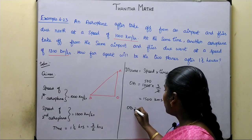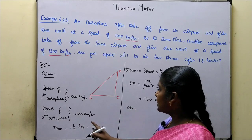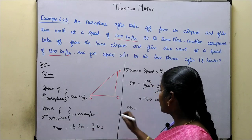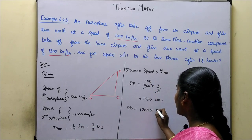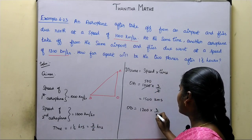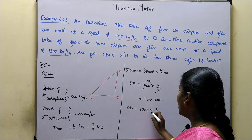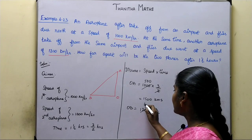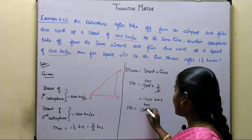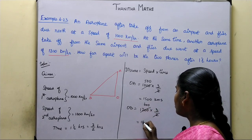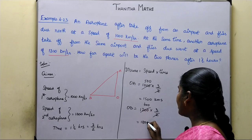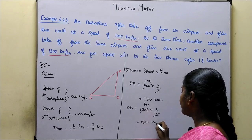OB distance — speed is 1200. So, 1200 into 3 by 2. Cancel, parameter gives 600. So 600 into 3 is 1800 km. Therefore OB is 1800 km.